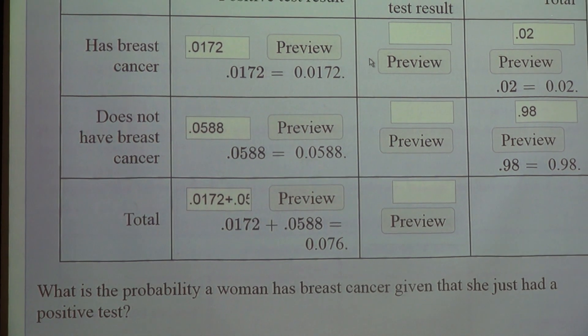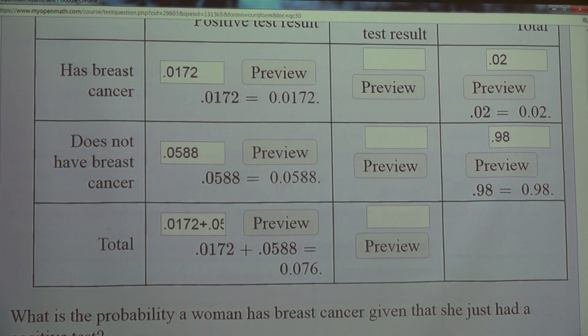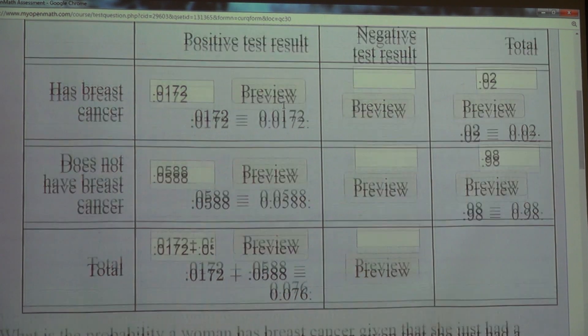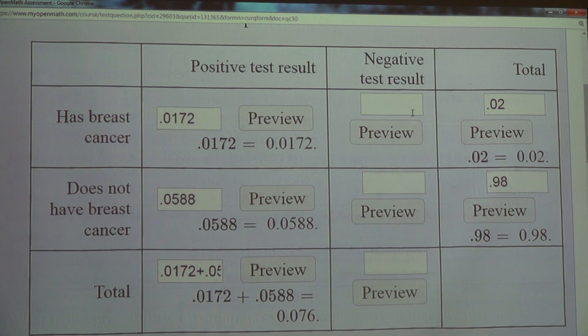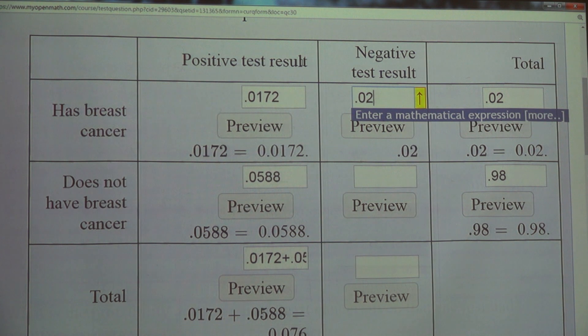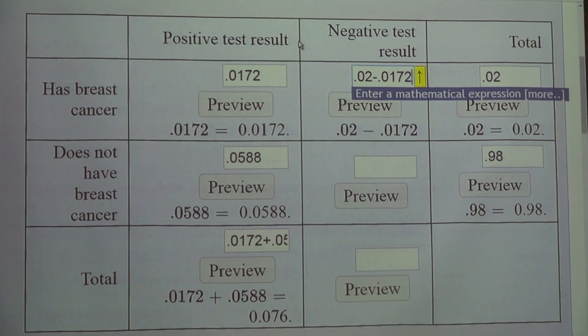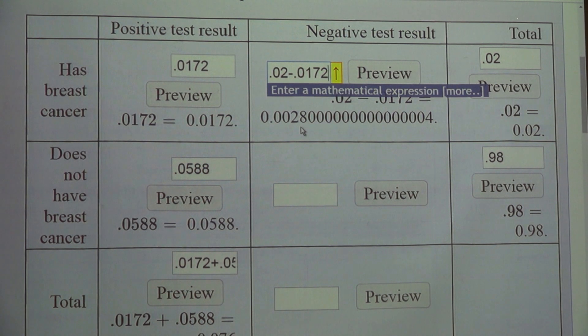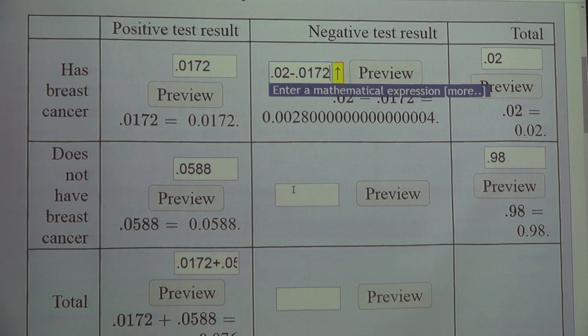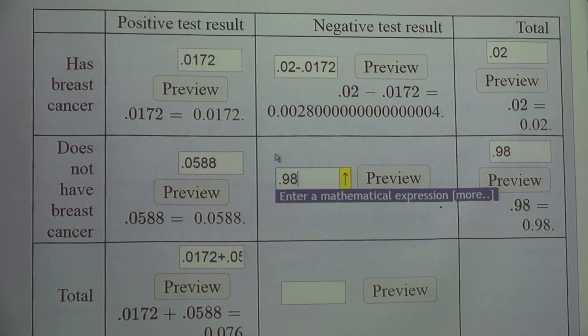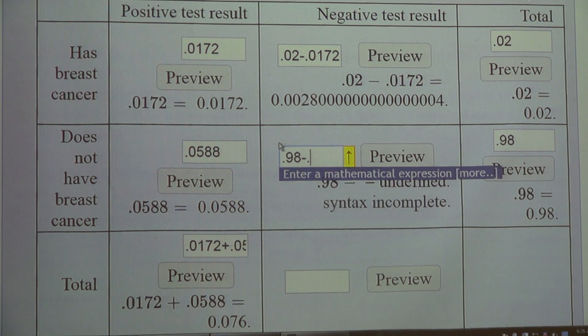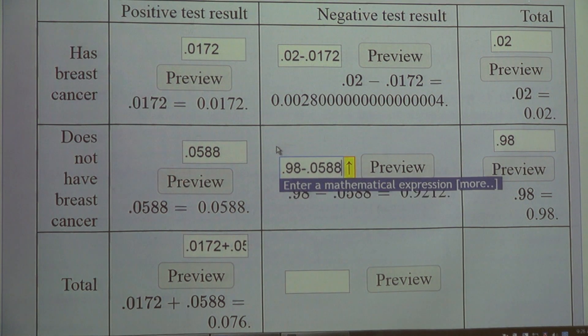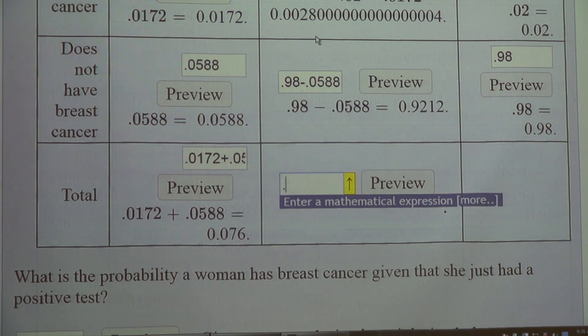If you need to fill in the rest of this table you can get it by subtracting. For example, this total going across here on the breast cancer bit is 2%. This bit right here in the table is 0.0172. So to get this we just subtract. We take the 0.02 and we subtract off the 0.0172. You get super exact answers and you don't have to worry about typos from doing it on a calculator and retyping it. Same way down here you can just take your 0.98 and subtract off your 0.0588. And then to get this total we would just add these two together. That's the whole table filled out.